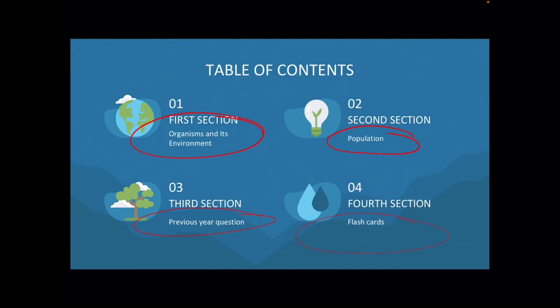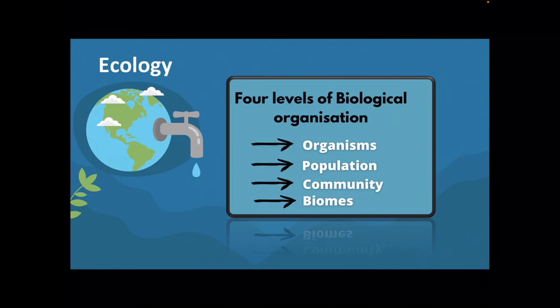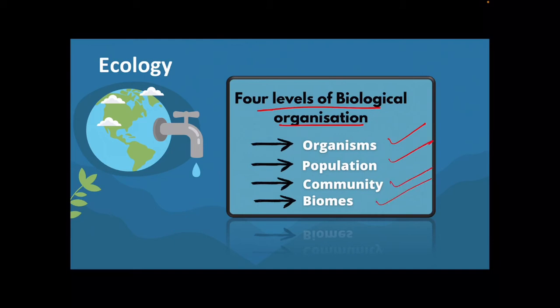Let's start with the first section: organism and its environment. When we study ecology, we look at four levels of biological organization — organism, population, community, and biomes. A group of organisms makes a population, a group of populations makes a community, and different communities in a similar area make a biome.